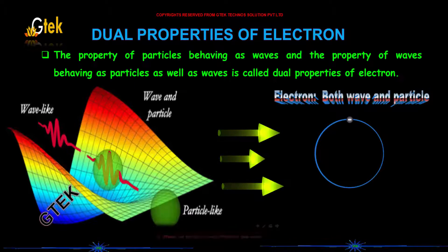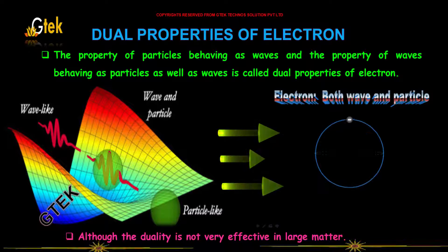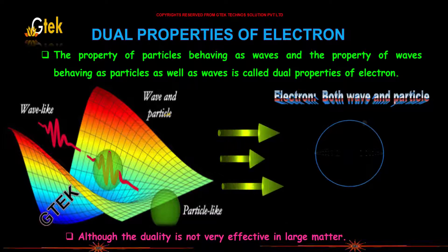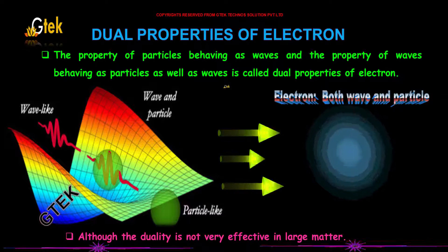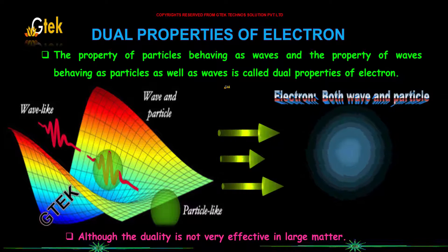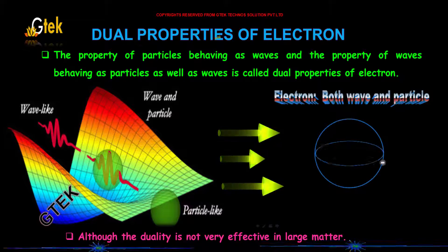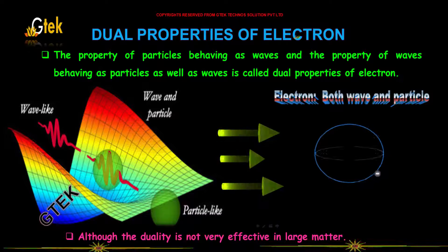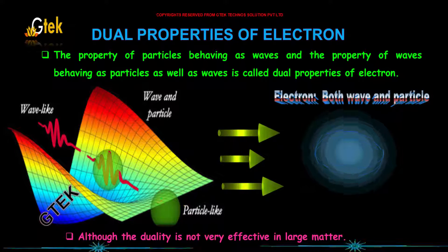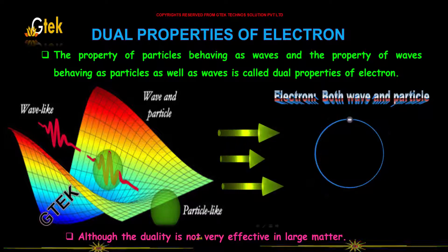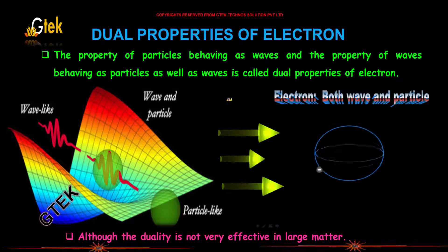The property of a particle behaving as waves, and the property of waves behaving as a particle as well as waves — that's called the dual properties of electrons. You are able to see the wave nature and the particle nature, although this duality is not very effective in large matters.